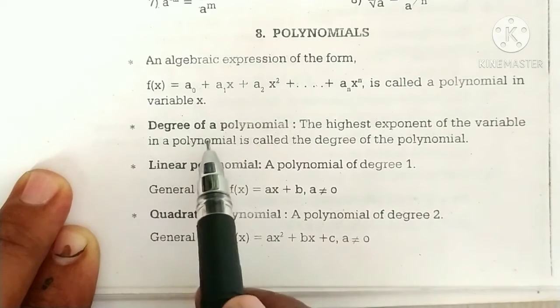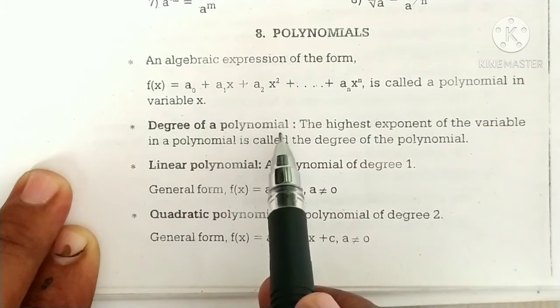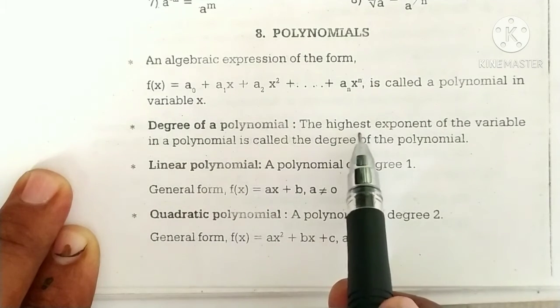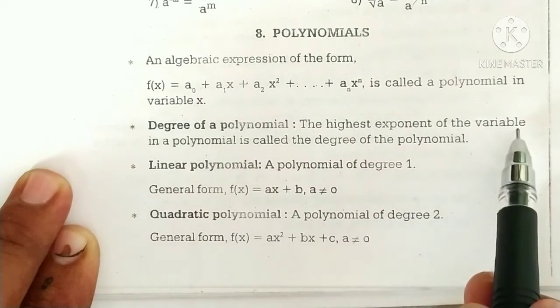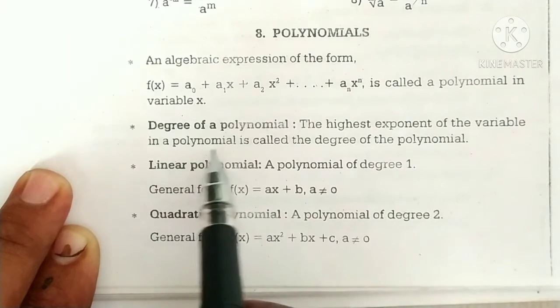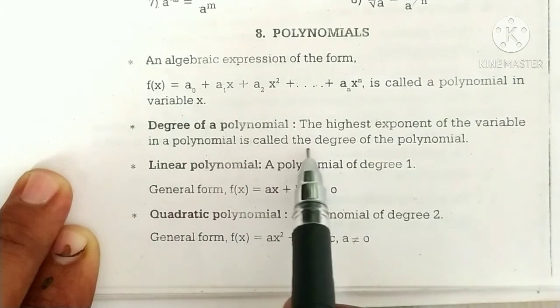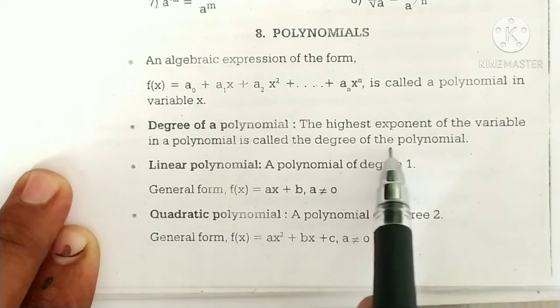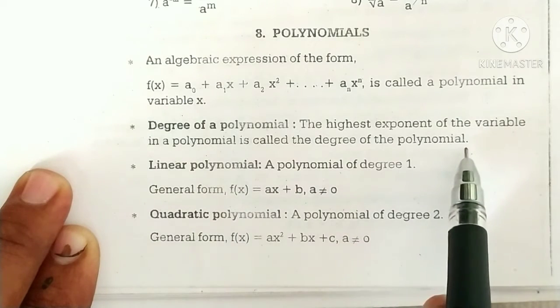Degree of a polynomial. The highest exponent of the variable in a polynomial is called the degree of the polynomial.